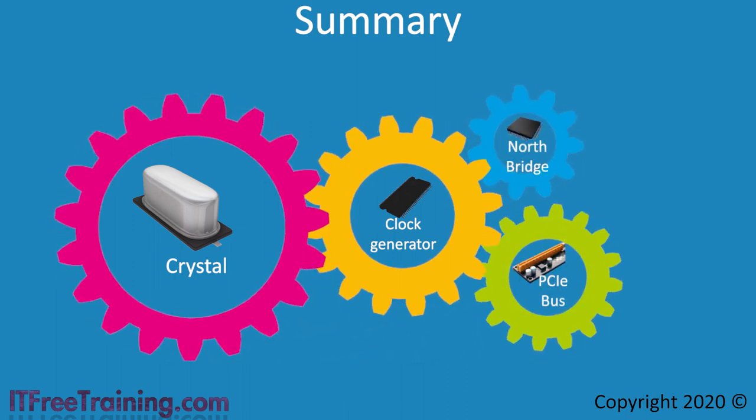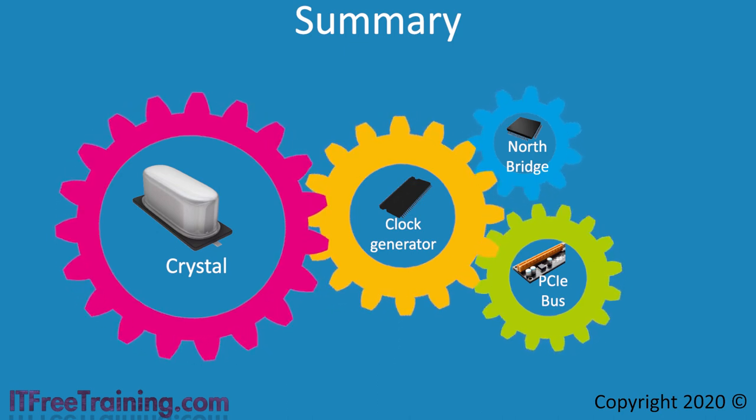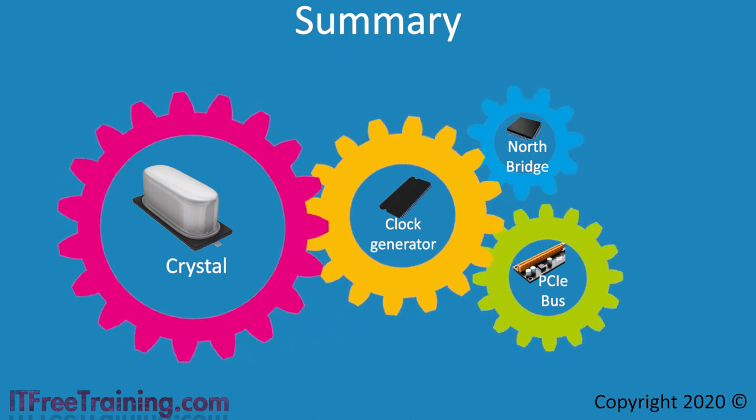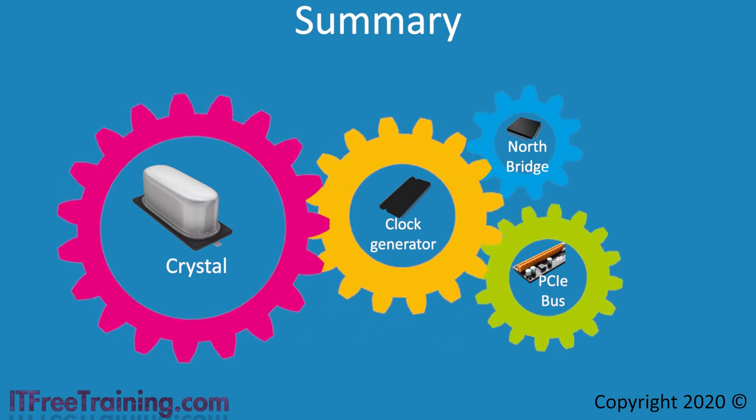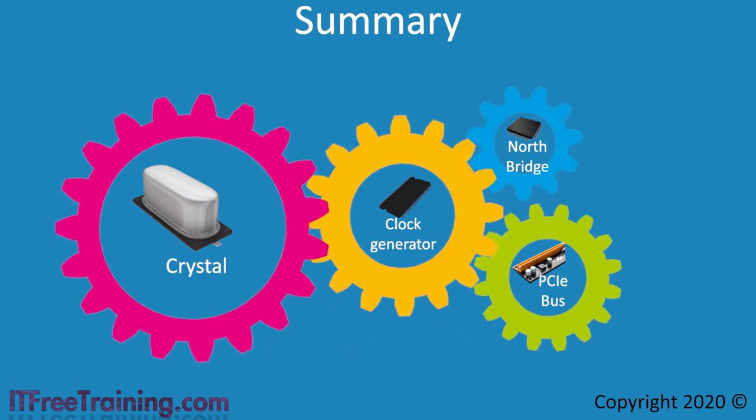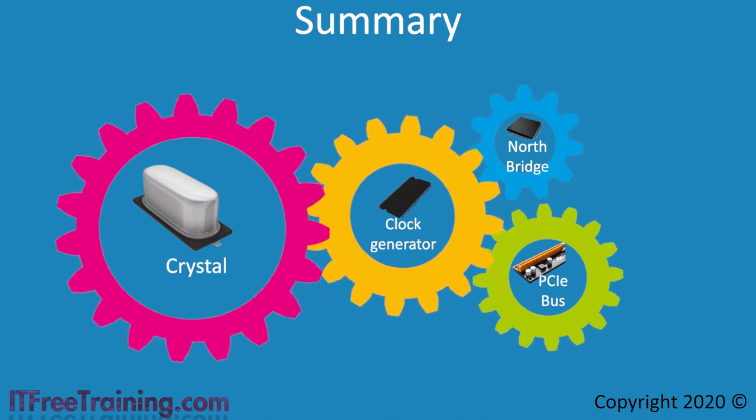If you have buses such as an ISA bus, this will run at a much slower speed. These slower buses may have their own crystal oscillator. These clock rates are not covered in this video, but are either generated by the South Bridge or other chips on the motherboard.